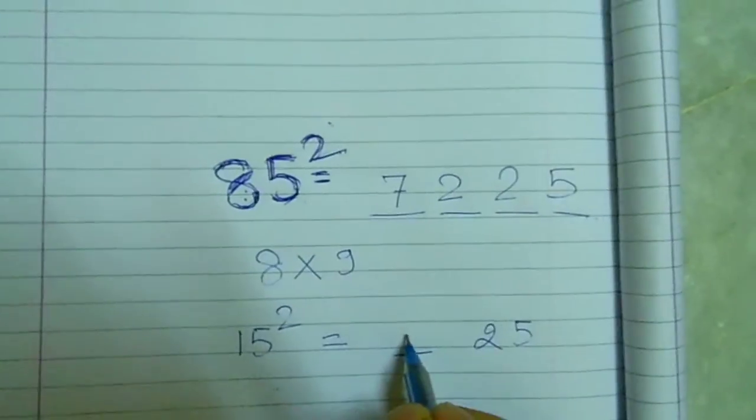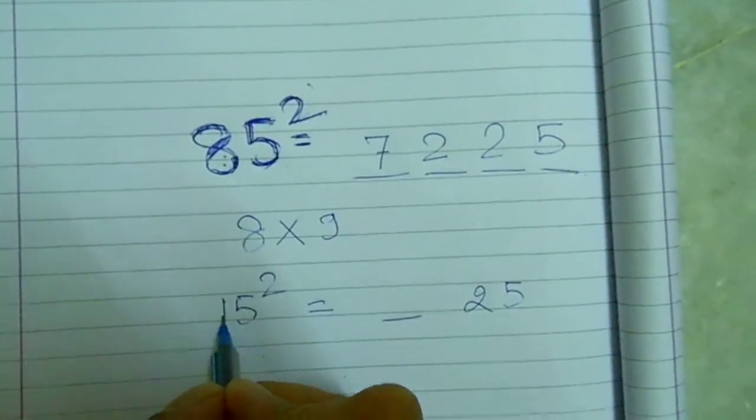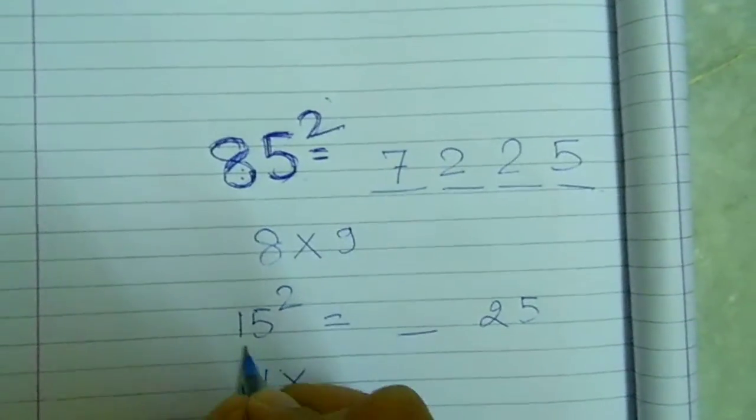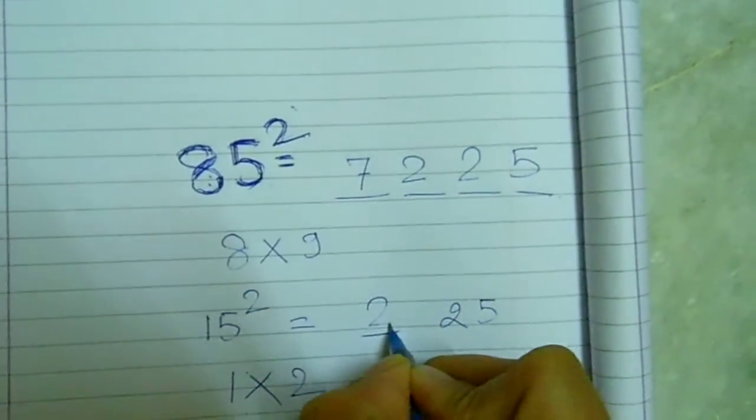To get this number, we will multiply this number by this number plus 1, that is 2. We get 225.